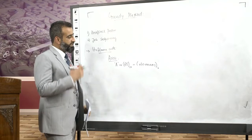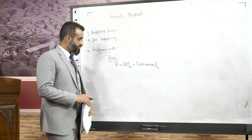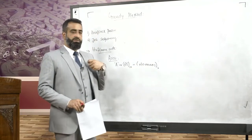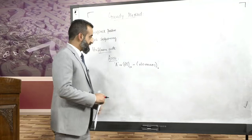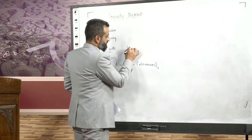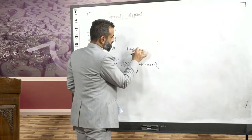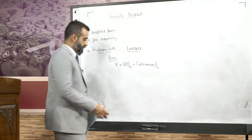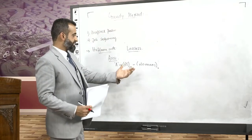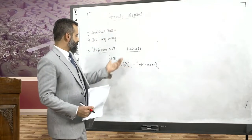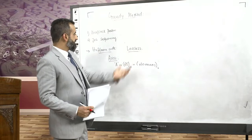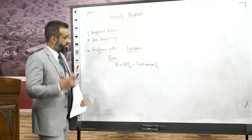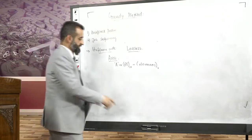If we could somehow reduce the number of bits being used — if we could optimize without losing any data or information — then that would essentially be a lossless compression. Let's take an example and see how we can do it, and then apply Huffman code to see the optimization in the number of bits used.